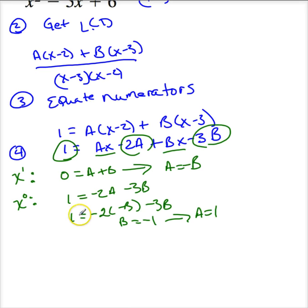So what this tells me is now I can rewrite this entire thing so that it is equivalent to A, let me see, I need to see what A was over here, 1 over x minus 3 minus 1 over x minus 2. This is a partial fraction decomposition.